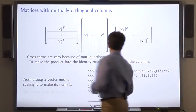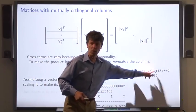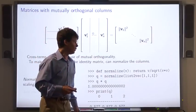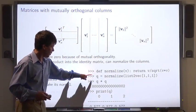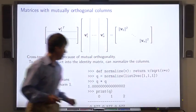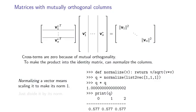And here's the definition of normalize. It just takes a vector and divides it by its norm, which is the square root of its inner product with itself. So, for example, the vector with entries 1, 1, 1, once it's normalized, its norm squared is 1, and the entries are 1 over root 3.